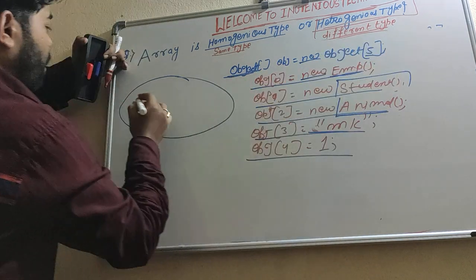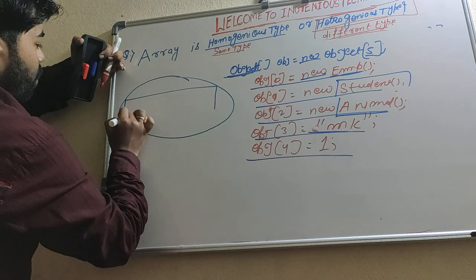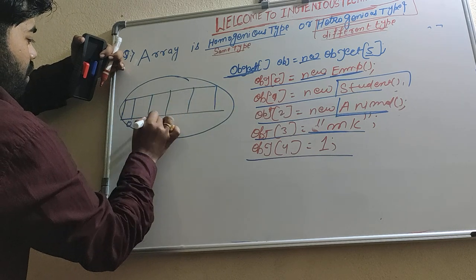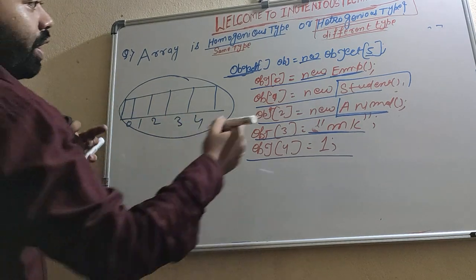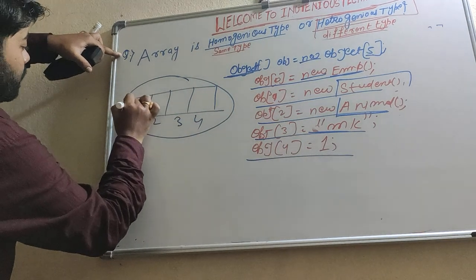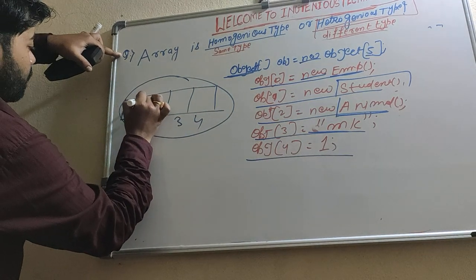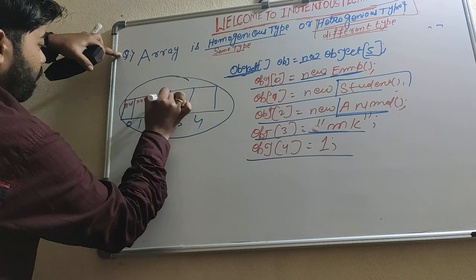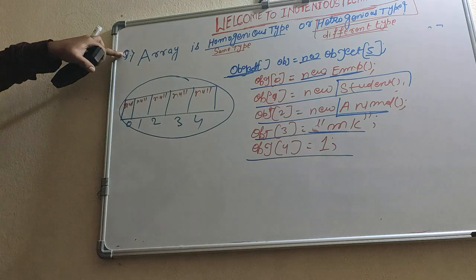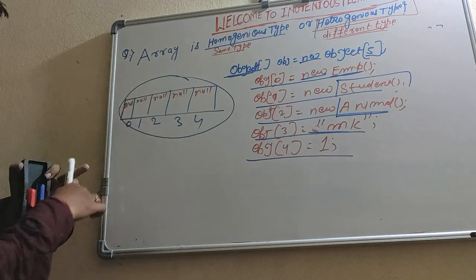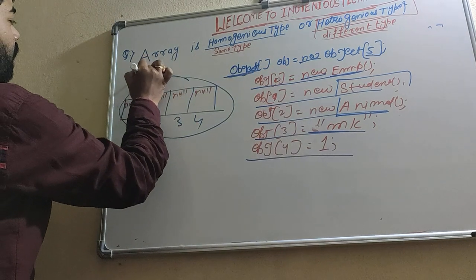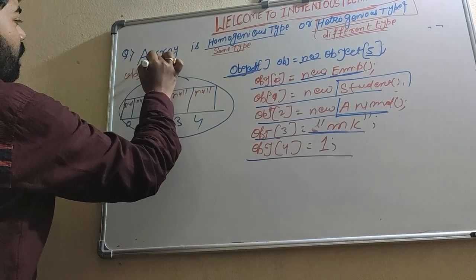So here we have 5 locations. All elements are of Object type, and by default their value is null. The OBJ reference variable points to this array, which stores references pointing to different objects at their respective memory addresses.